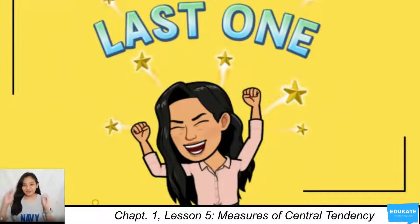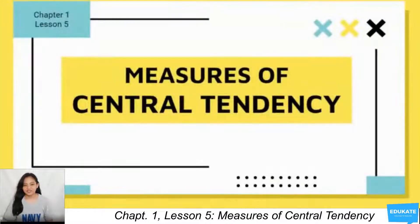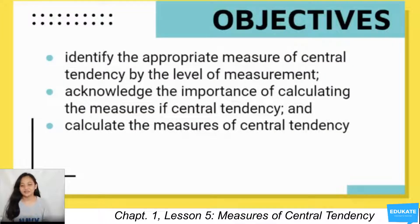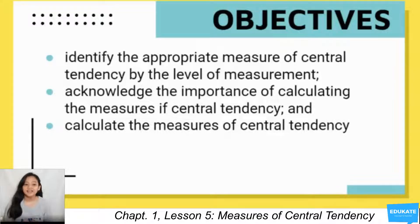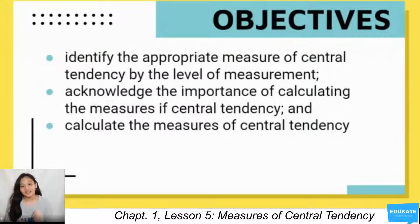Welcome to our last session for this week. Our last topic still under chapter one is lesson five: measures of central tendency. Our objectives for this lesson are to identify the appropriate measure of central tendency by the level of measurement, acknowledge the importance of calculating the measures of central tendency, and calculate the measures of central tendency.